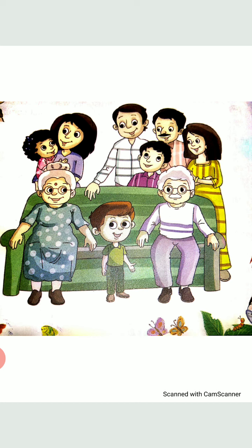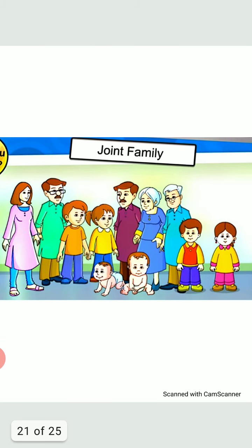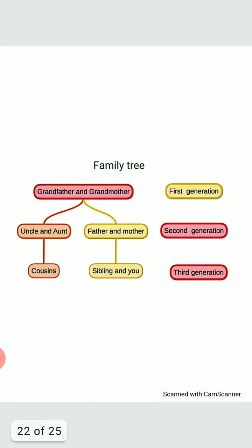So dear kids, these were all about types of families. Now look at the next picture — you can see this is a family tree. In this family tree, we will discuss our three generations. Look at the top line: in the boxes is written grandmother and grandfather. This is our first generation.